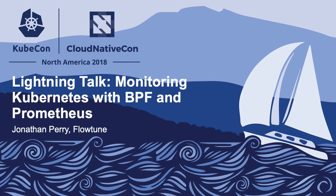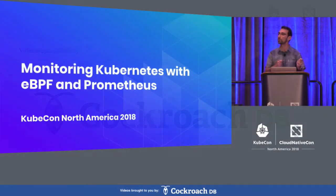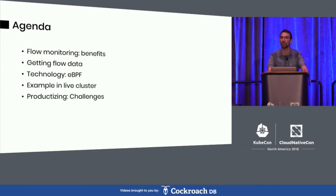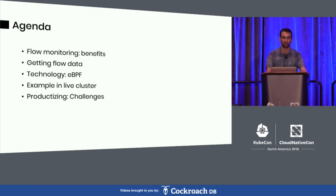In this lightning talk, we'll cover how you can get 100% visibility into your services communication — the flow of data between your services on Kubernetes. I'll first go through why you would want to monitor the flow between your services, then go through an example of how you can get this data, cover technology that would allow you to get this efficiently, run through an example cluster of how this data looks like, and briefly touch on how to productionize it and what are the challenges.